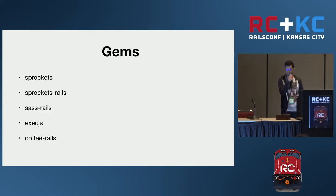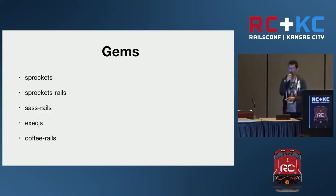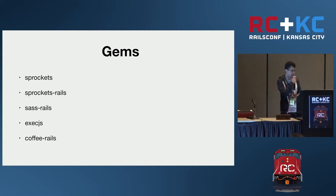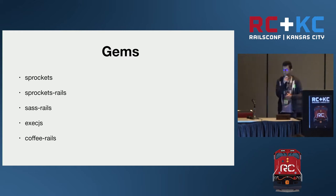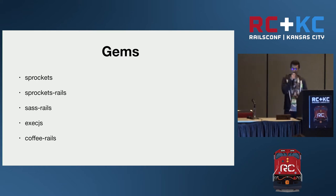The asset pipeline is made up of a bunch of gems. These gems are: Sprockets, sprockets-rails, sass-rails, execjs, and coffee-rails. I'm going to go through each one and explain how they work.